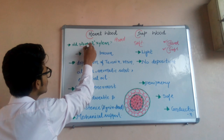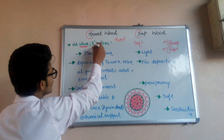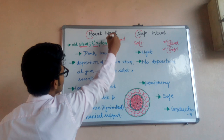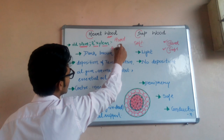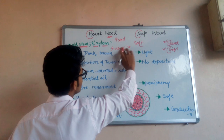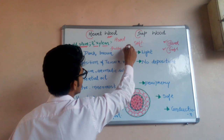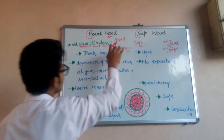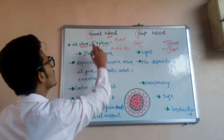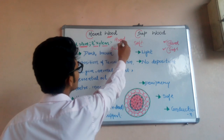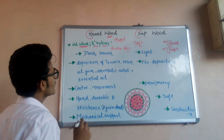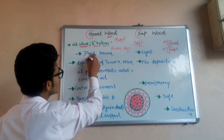We are taking into reference an old stem — one in which the secondary xylem or wood is fully matured and fully developed. If we are talking about secondary xylem, it can be divided into hardwood and sapwood. Hardwood is going to be hard and sapwood is going to be soft.